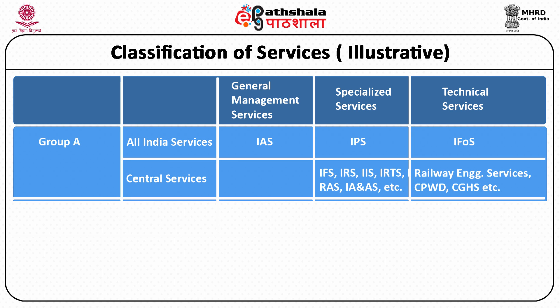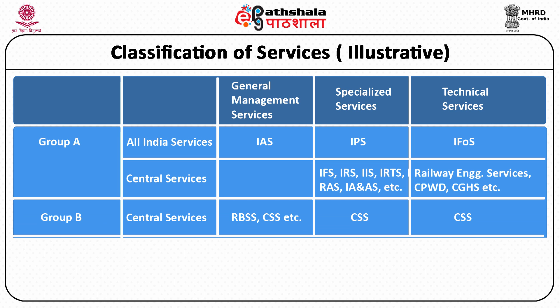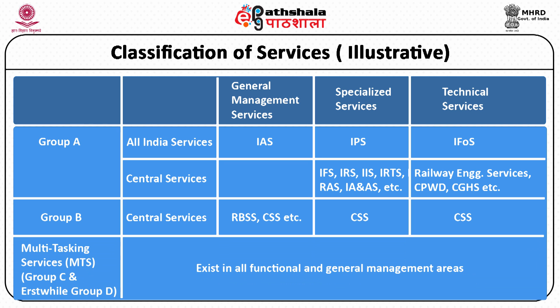In the Central Services Group A, we have no General Management Service — we have only Technical Services and Specialized Services. In the Group B Central Services, we have all three categories: General Management Service, Specialized Service and Technical Services. Apart from that, we have Multitasking Services, which exist in all General and Functional Management areas.